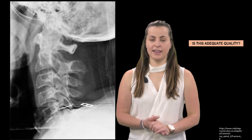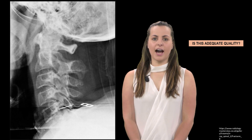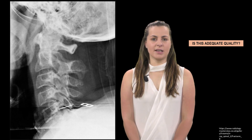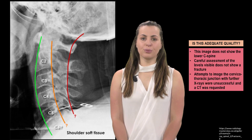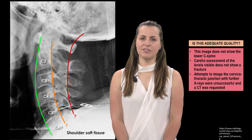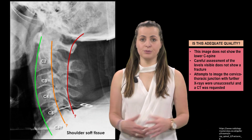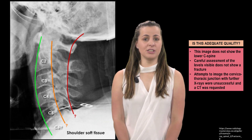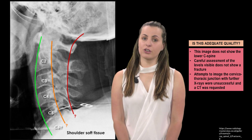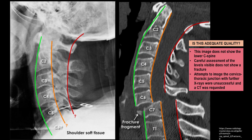Before moving on to the lumbar region, consider whether the lateral C-spine provided meets the adequacy criteria discussed. Tracing the reference lines and counting vertebrae reveals that C7-T1 is not visualized in the scan. Everything else appears normal, but additional attempts to image the cervicothoracic junction were unsuccessful and a CT scan was requested. CT reveals a teardrop fracture of C7 with displacement of the C-spine — this is why ensuring adequacy is critical, given the likelihood of missing fractures in the C7-T1 region.